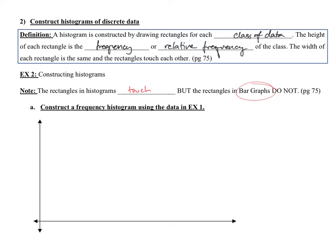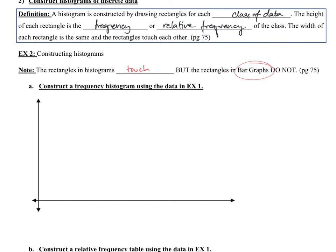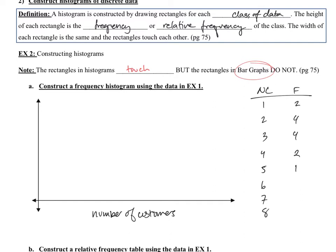Let's construct a frequency histogram using the data from example one. We'll label the axes: number of customers on the x-axis (1 to 8), and frequency on the y-axis (1 to 4, since 4 is the highest). For customer count 1 we had frequency 2, for 2 we had 4, for 3 we had 4, for 4 we had 2, for 5 we had 1, for 6 we had 3, for 7 we had 3, and for 8 we had 1.